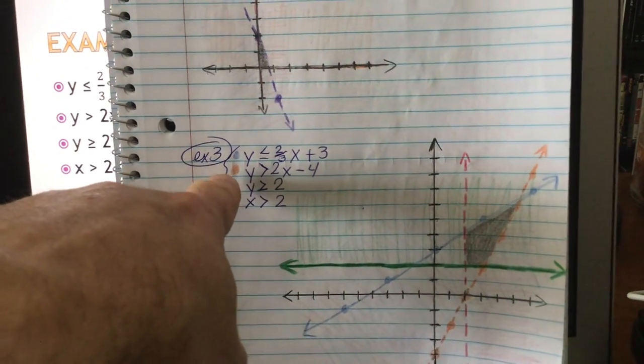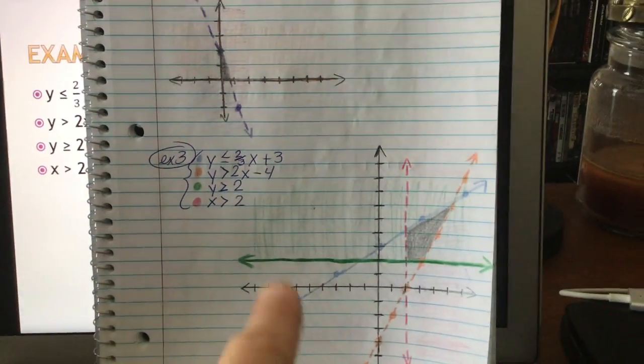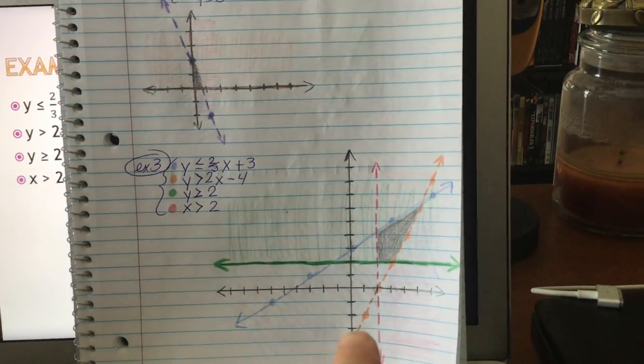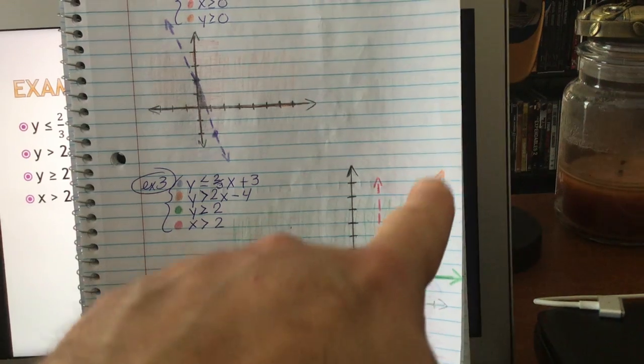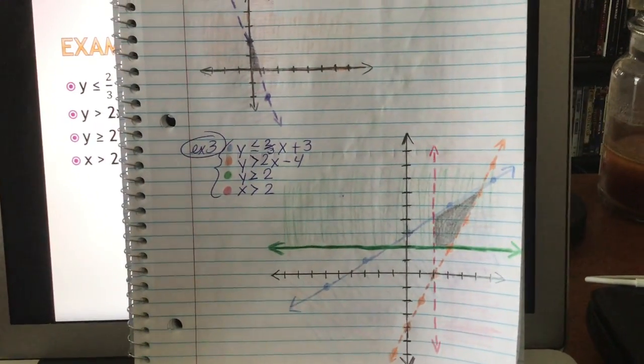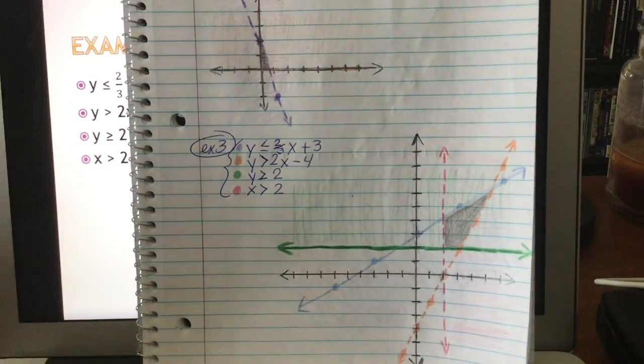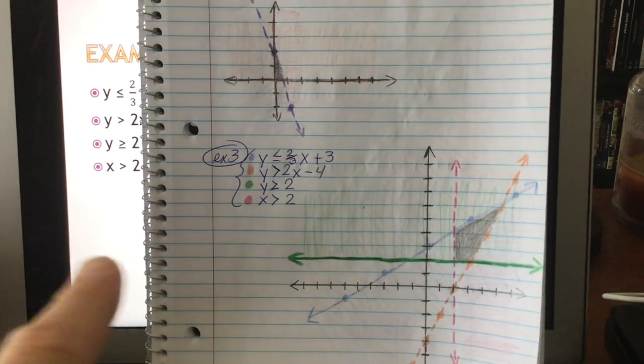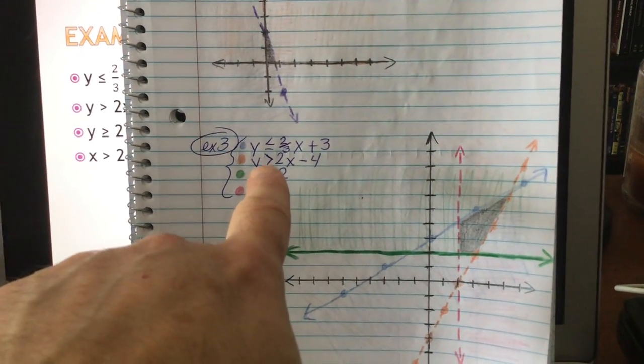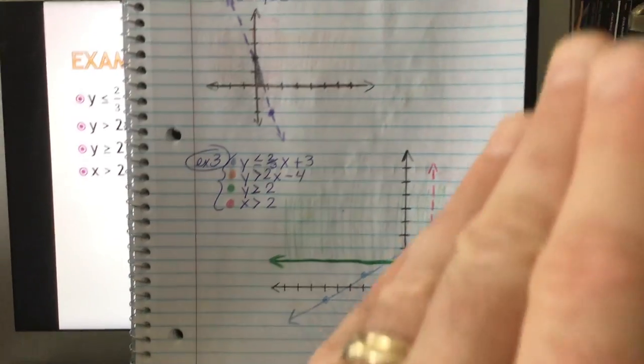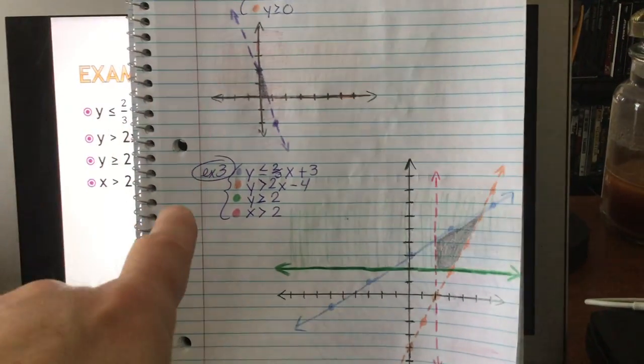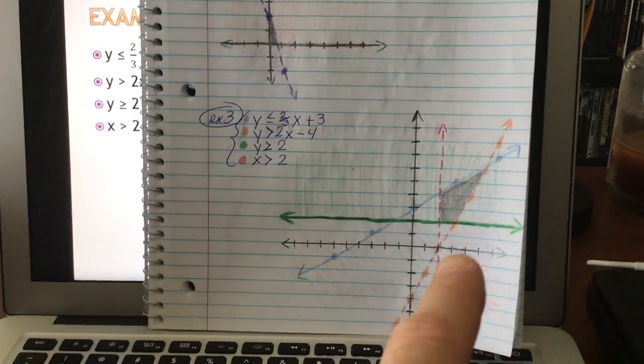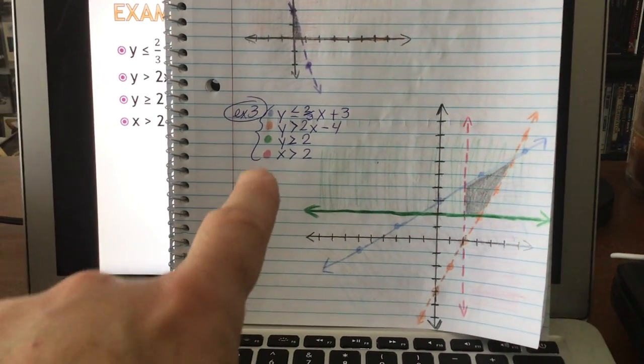My second line is orange. I start at negative four, go up two and over one, up two and over one, up two and over one, and so forth. That line is dotted or dashed because it is not included in the region because it doesn't have or equal to in it. And then again, zero, zero is true because zero is bigger than negative four. So I'm shading towards zero, zero.